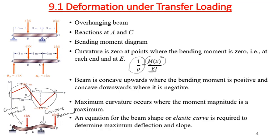The equation of the beam shape, or elastic curve, is required to determine maximum deflection and slope. If we look at the neutral axis in total, it bends as a continuous curve. We need the equation of this curve so that we can find the maximum deflection and slope at any point.